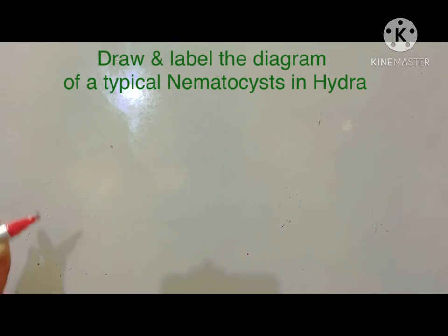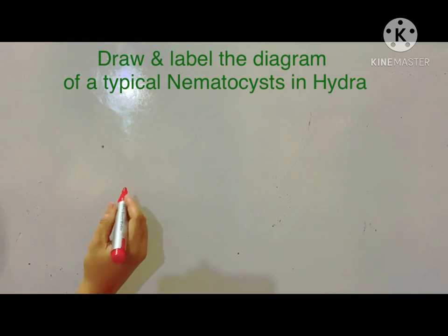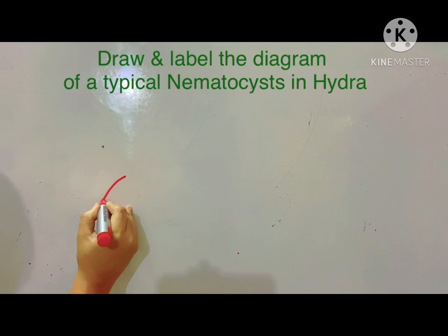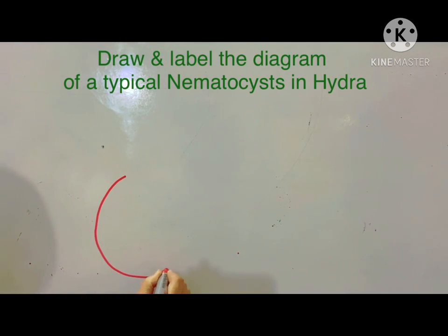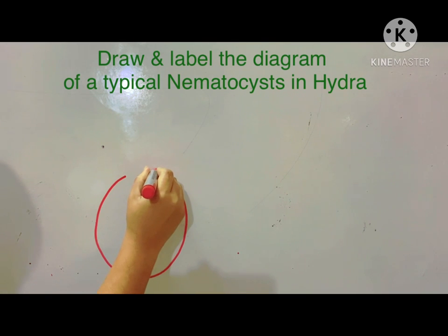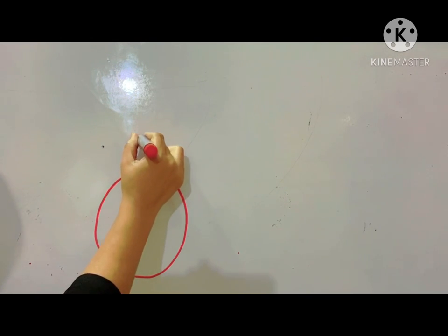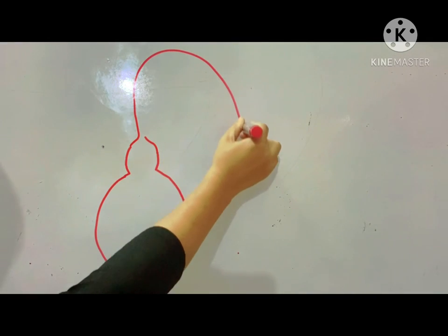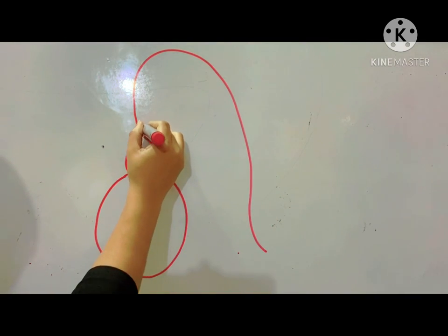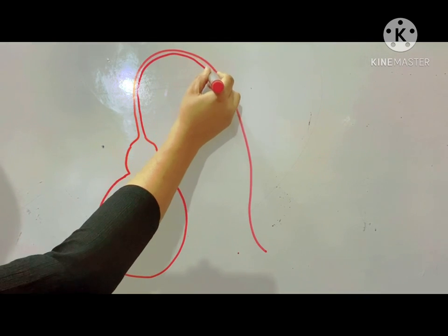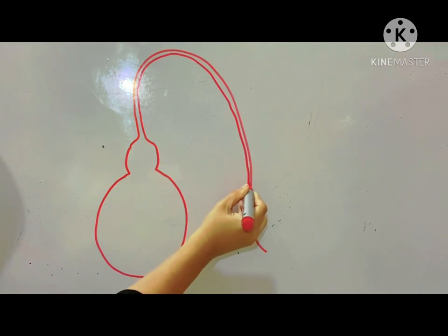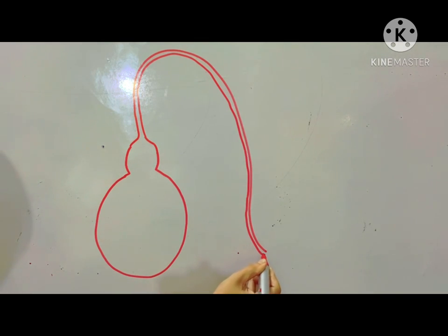Here you can see I have taken some blank space to draw the diagram of the nematocyst. At first, let's make a kind of outline. My suggestion is to draw a random sack like this, then the shaft. Then you need to draw the erected thread or string like this. I am showing the easiest way to draw the nematocyst. So, this is the base form of a nematocyst.